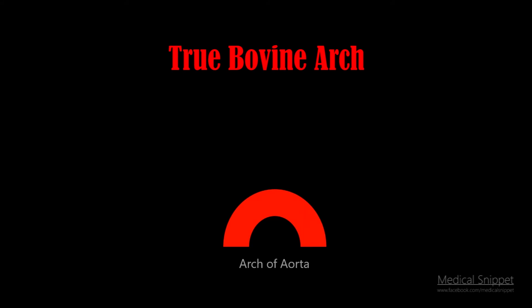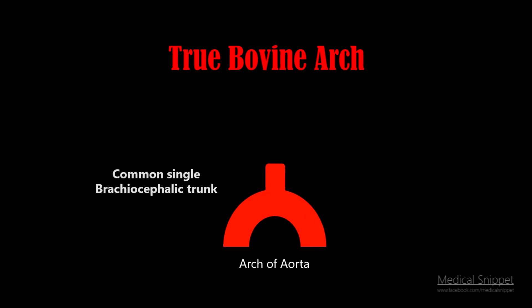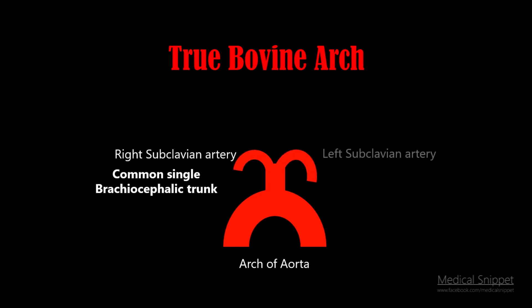The true bovine arch is present in cattle. It has a single common brachiocephalic trunk that splits into the bilateral subclavian arteries and a single bicarotid trunk.